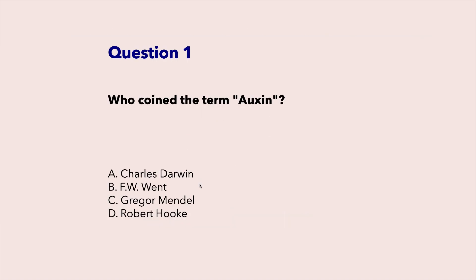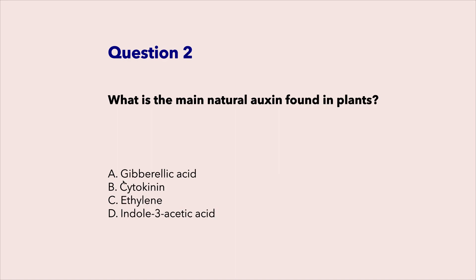Who coined the term auxin? F.W. Wendt. What is the main natural auxin found in plants? Indole-3-acetic acid.